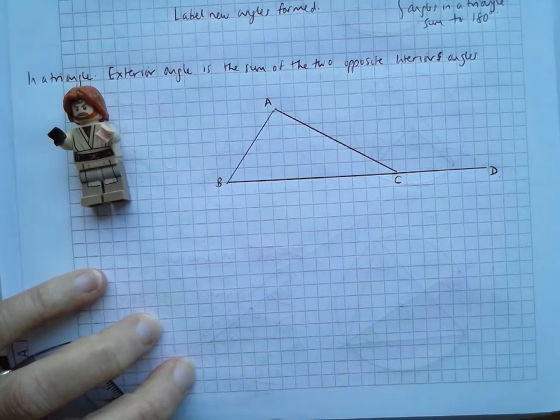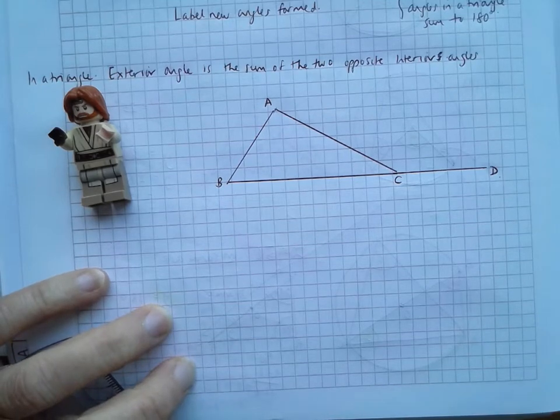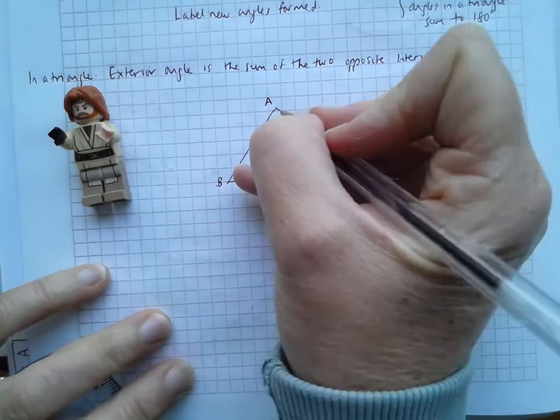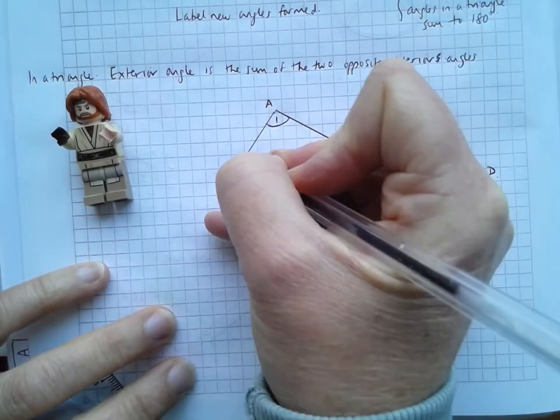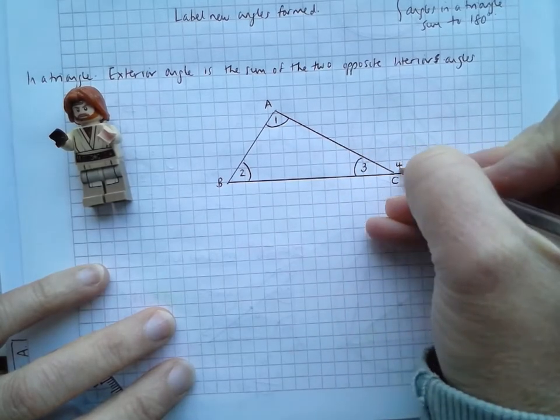Okay, so what I'm going to do is I'm going to label the angles in this triangle. This time I'm going to use numbers because the letters aren't really that helpful in this case. So I'm going to call this angle 1, this angle 2, and this angle 3, and this angle 4.